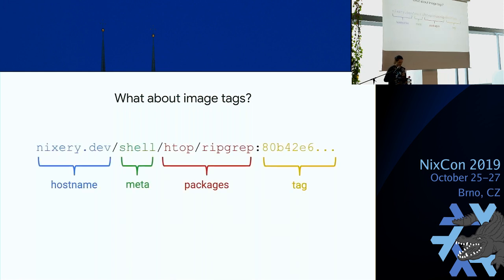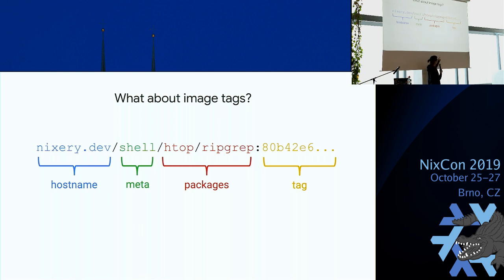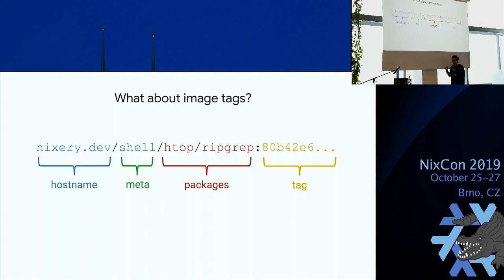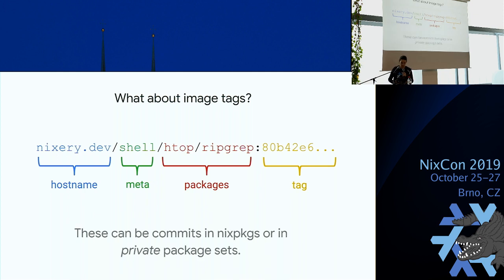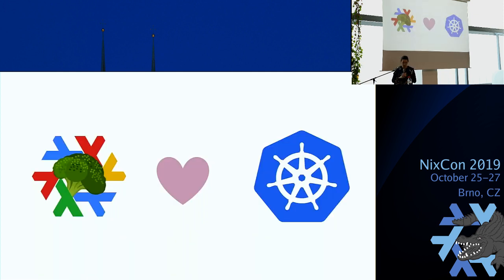What about image tags? One component of image names I didn't mention before is the image tag — the yellow part at the end. For Docker this is commonly versions, like 'ubuntu:20.04'. But I realized we can map this onto something else — specifically git commits. If you're pointing Nixery at the public Nix packages repo, you can use this to get arbitrary references like specific channels or commits. If you're pointing it at a private repository, you can have your CI substitute these parameters and use this as your deployment strategy.